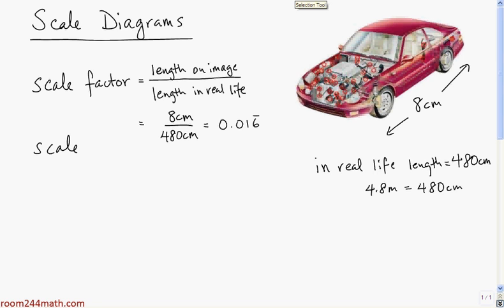What are other ways we can write the scale factor? We could write it as a fraction: 8 centimeters over 480 centimeters. The centimeters cancel out, giving us the fraction 8 over 480.